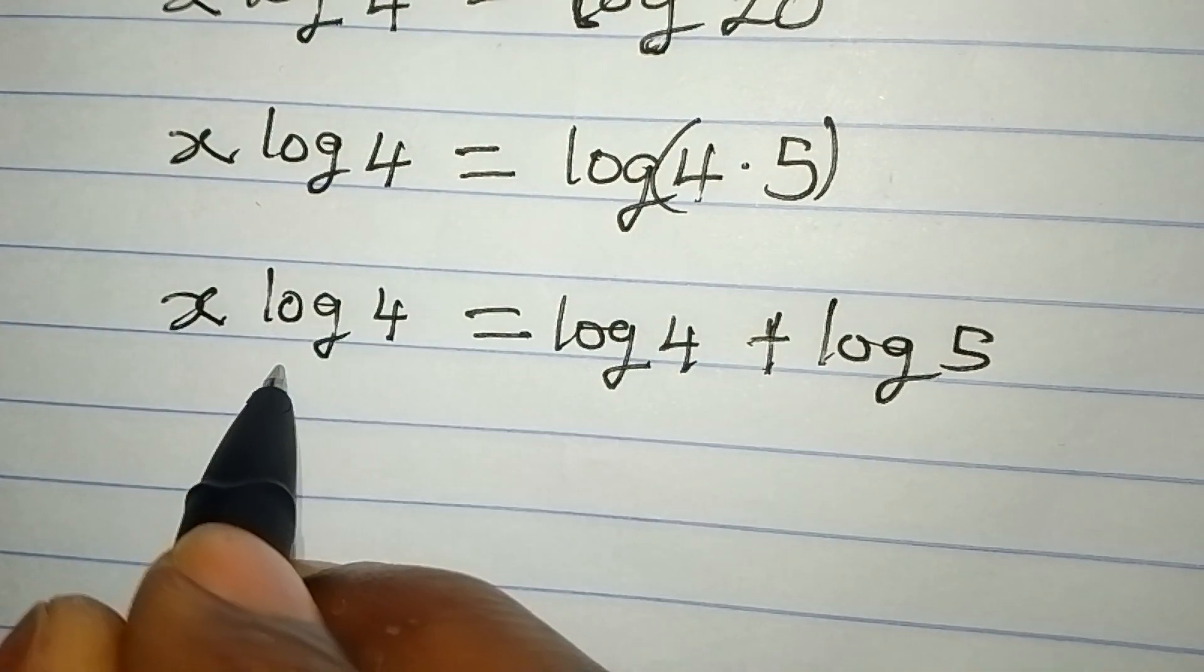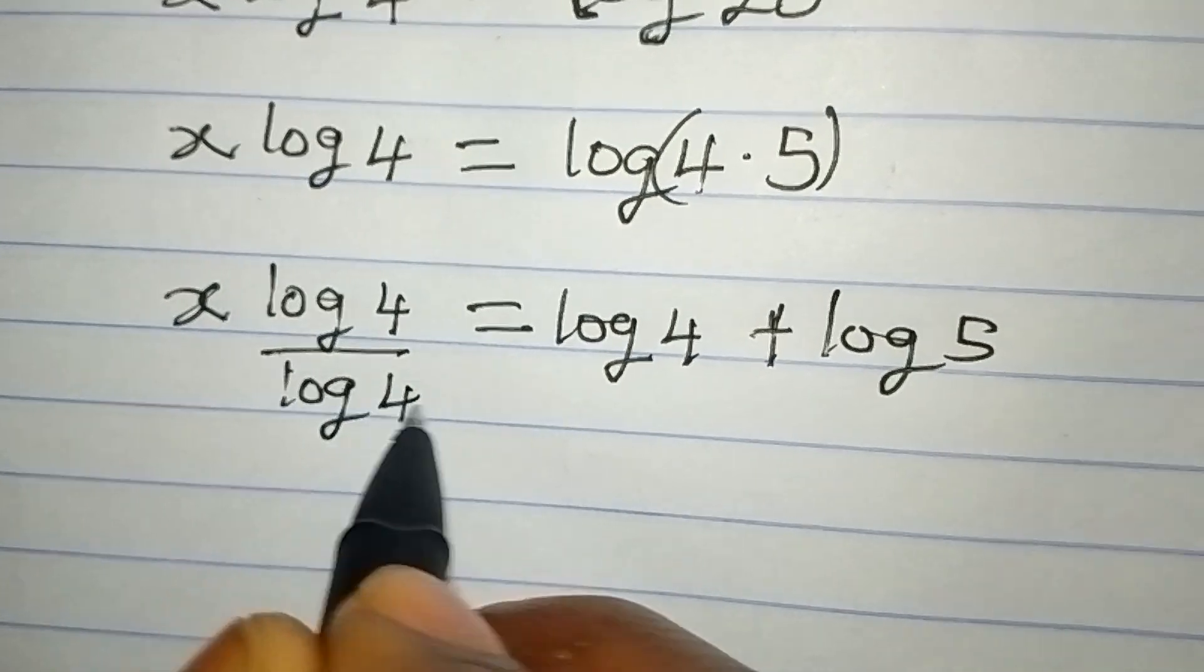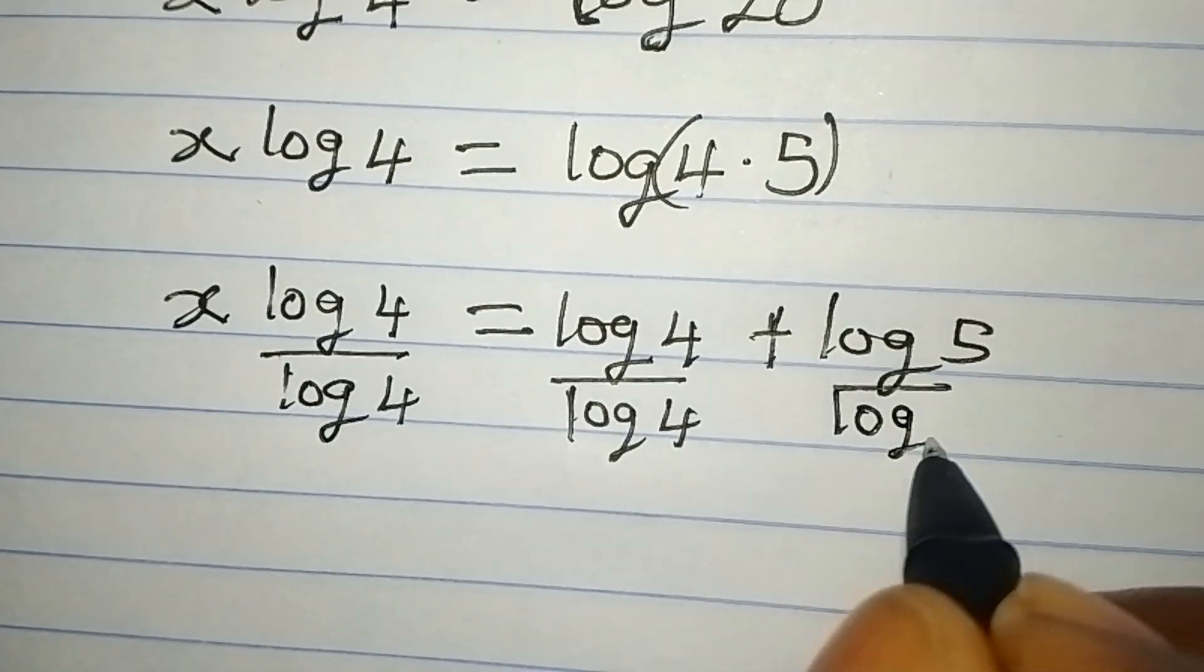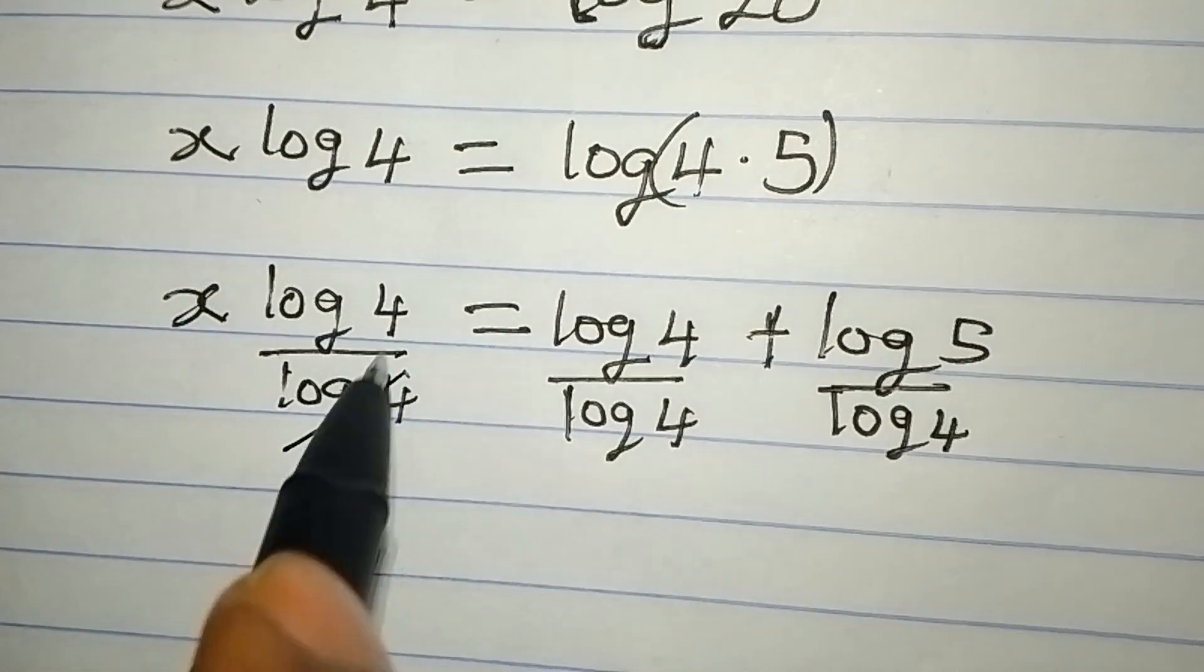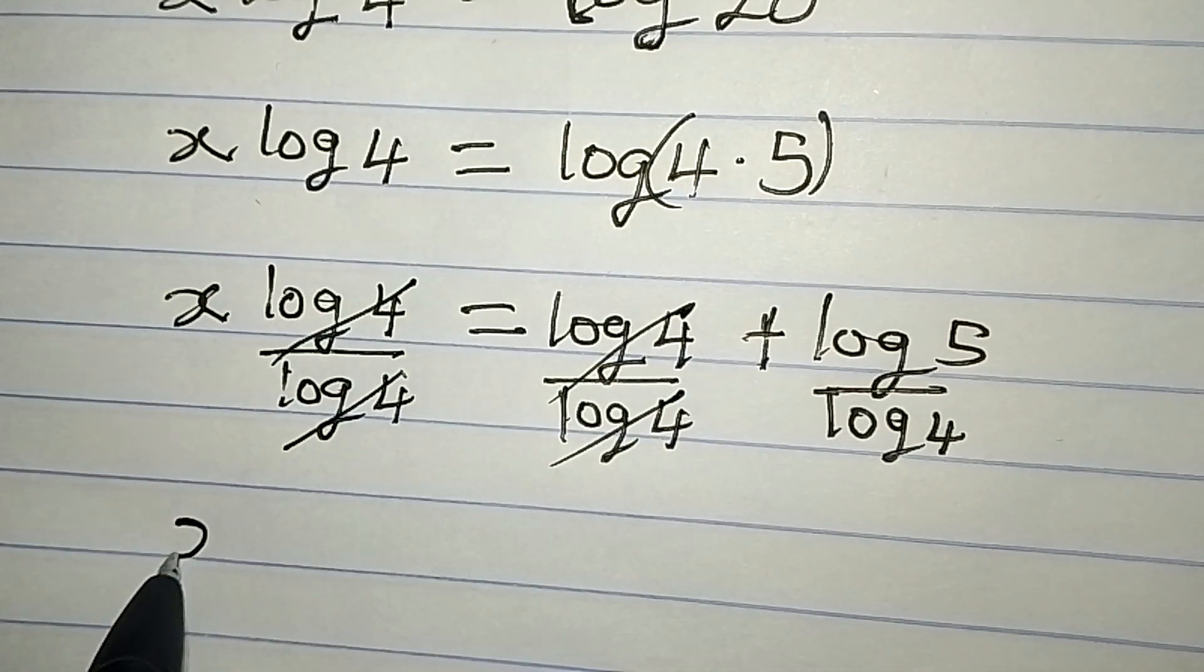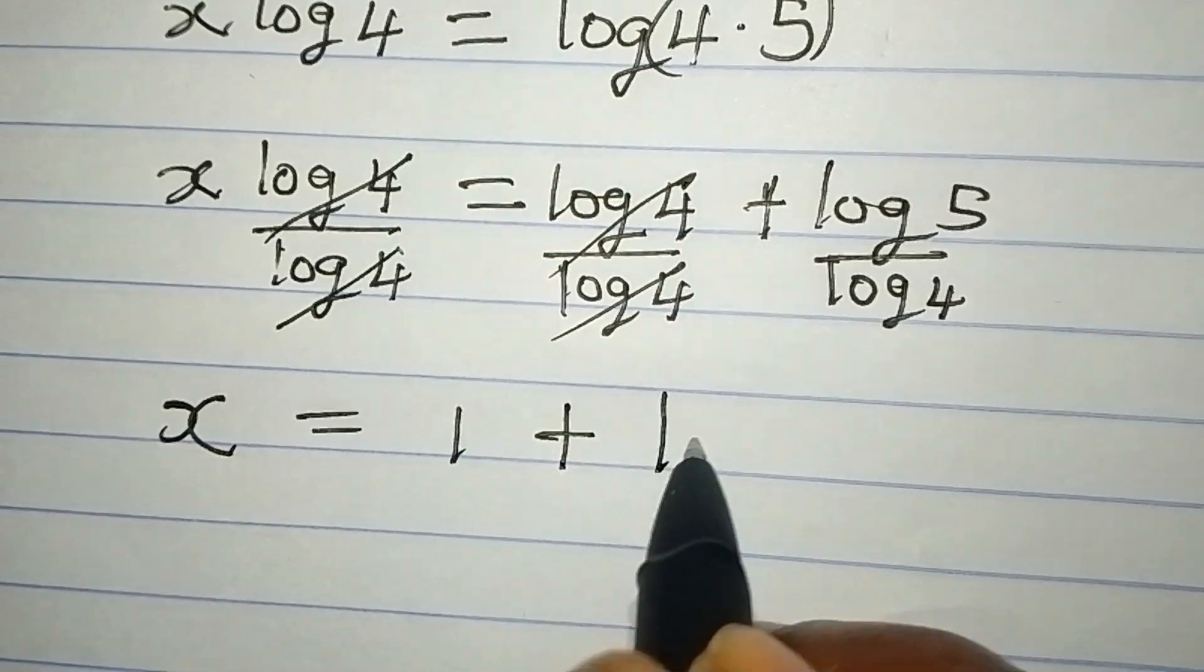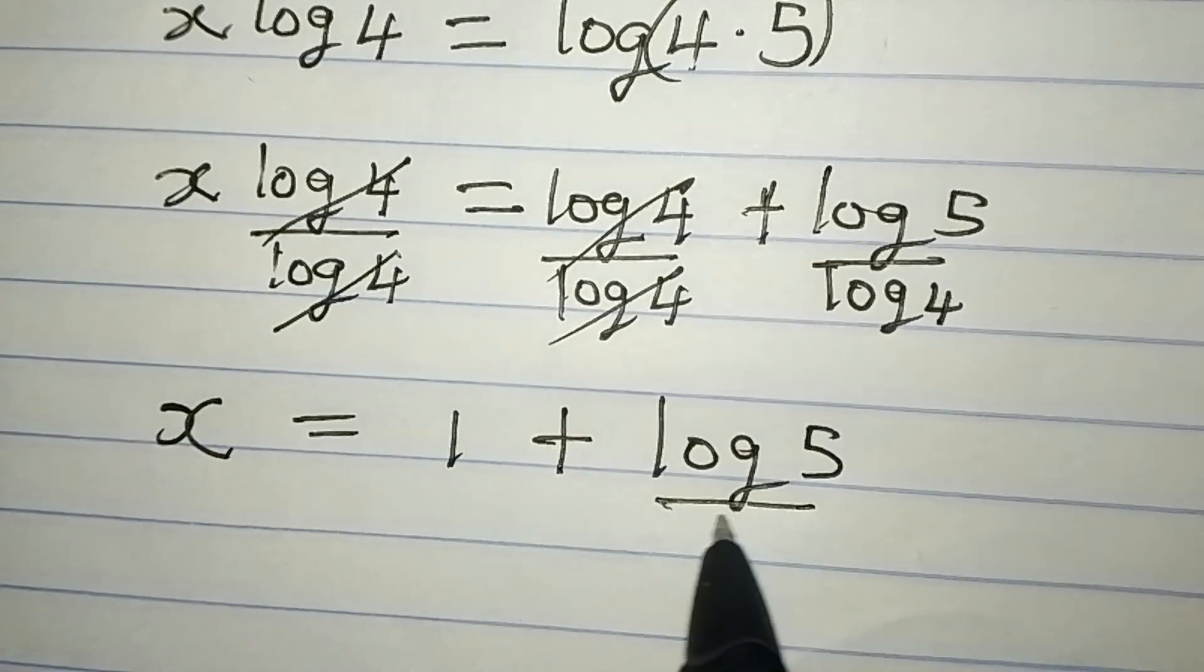The next thing is to divide both sides by log 4. This is going to go with this and this will go with this. Meaning that we have x alone being equal to 1 plus log 5 over log 4.